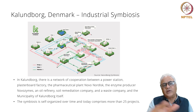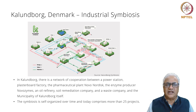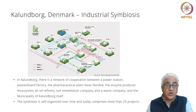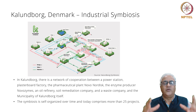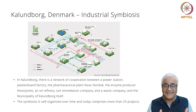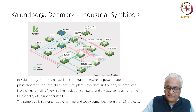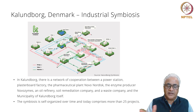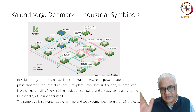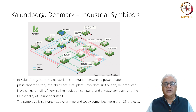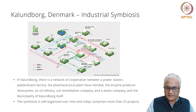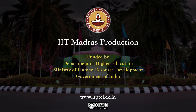So what have we learned? Here's a picture of the Kalundborg, Denmark industrial symbiosis — Google it, it's very interesting. Maybe it'll be interesting to find out what you can come up with. Essentially, there are three things you imitate: form — example, Kingfisher; process — example, Eastgate Center; system — example, the Kalundborg, Denmark industrial symbiosis.